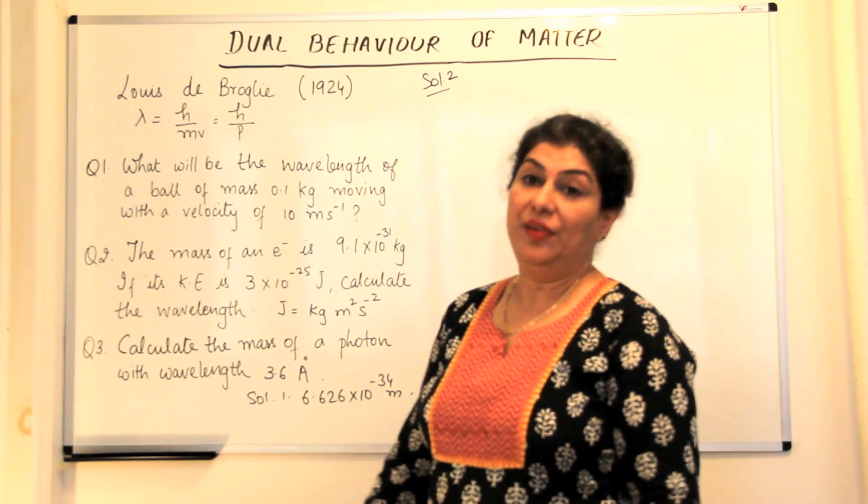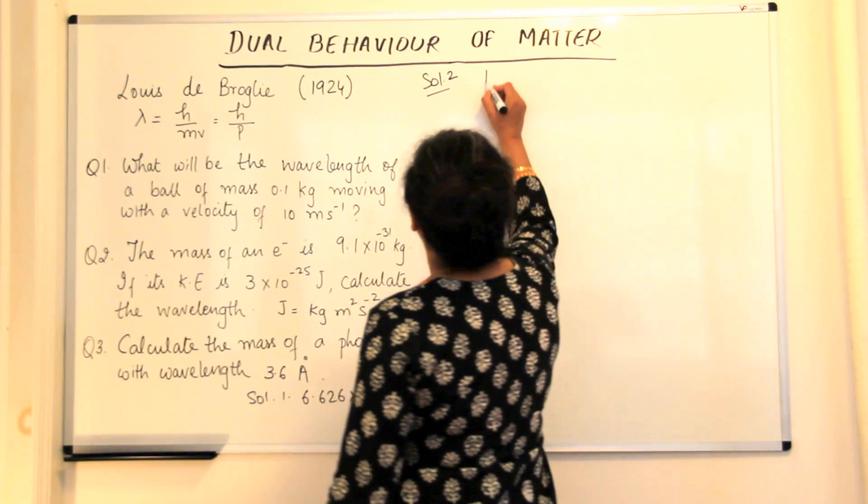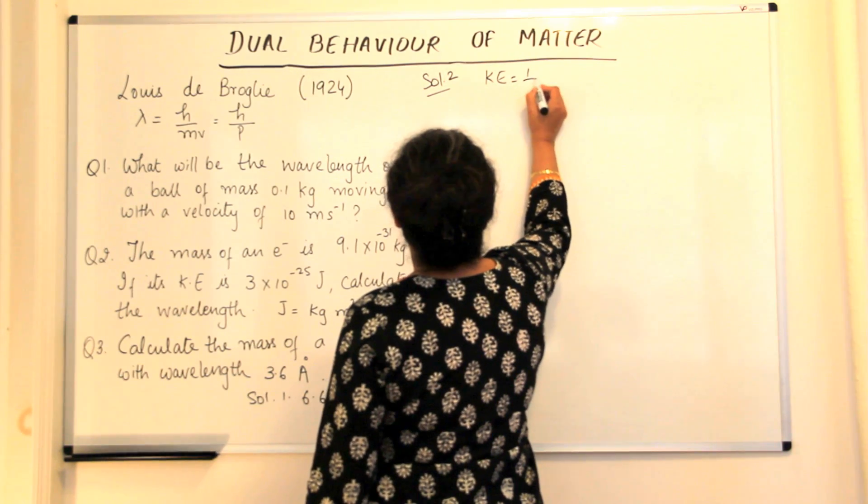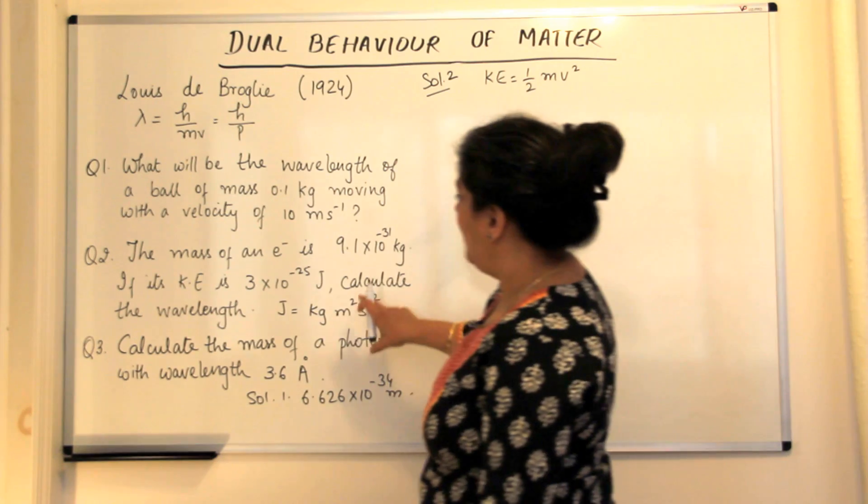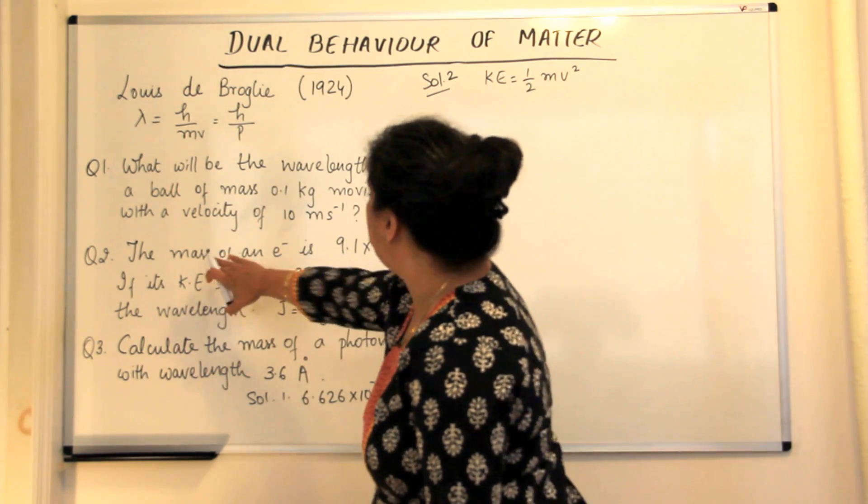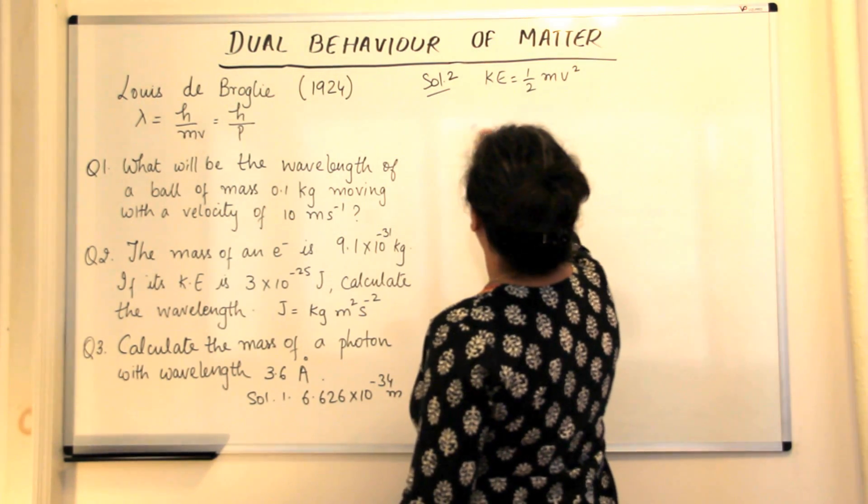you need to calculate the wavelength. We know that kinetic energy is equal to half mv square and we have to calculate the mass first. So what would mass be?